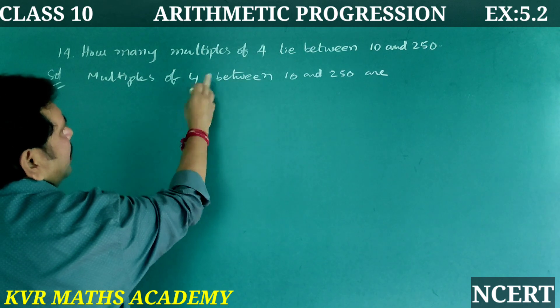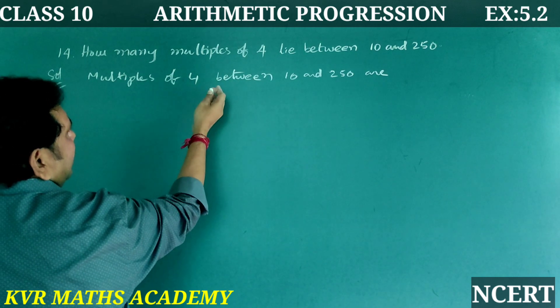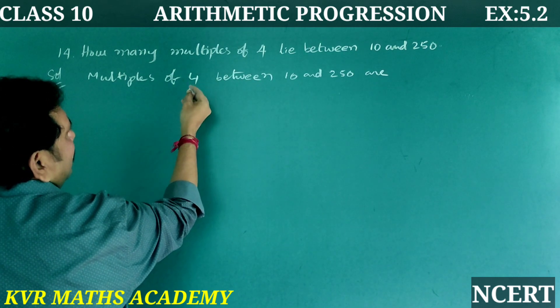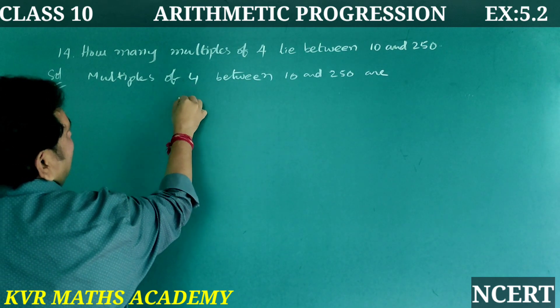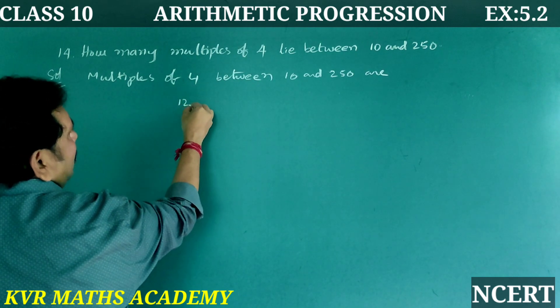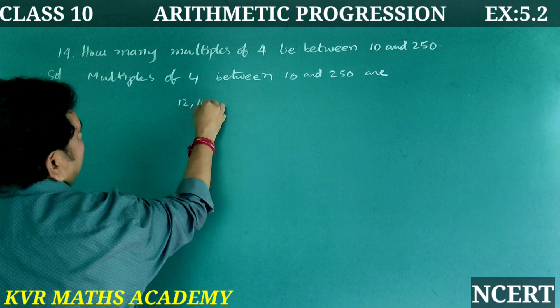The multiples of 4 are: for 2 it is 8, for 3 it is 12, for 4 it is 16, for 5 it is 20, and so on.